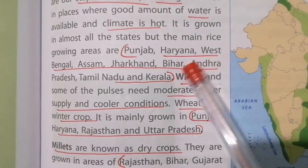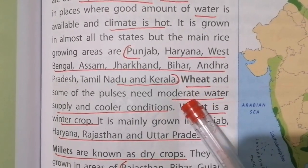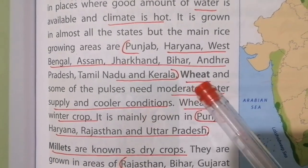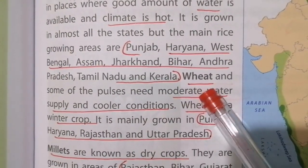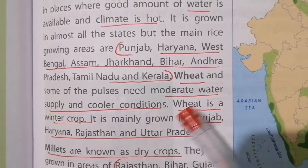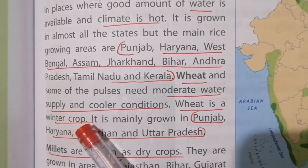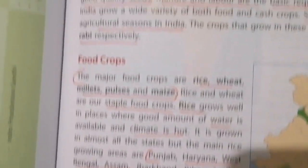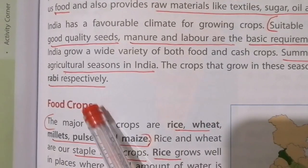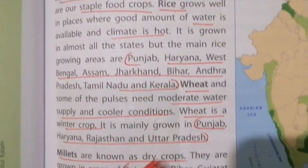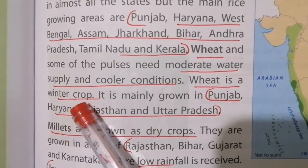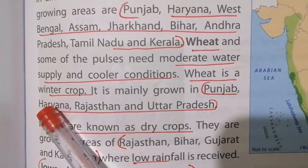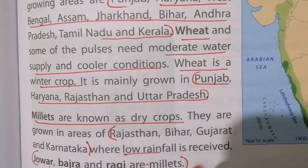Now coming to wheat — it requires moderate water and cooler conditions. It is a winter crop, so wheat is called a Rabi crop. What are the areas where wheat is grown? Punjab, Haryana, Rajasthan, and Uttar Pradesh.